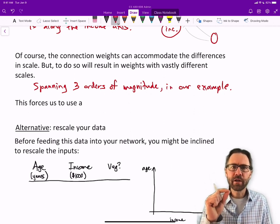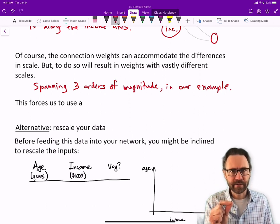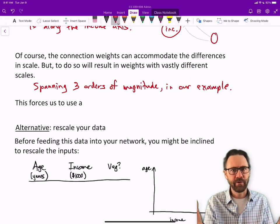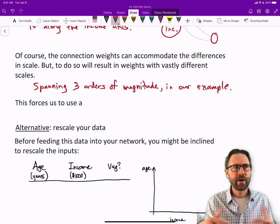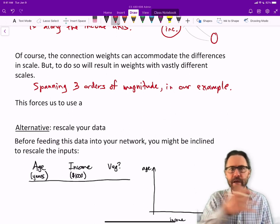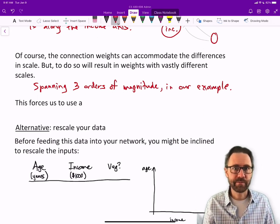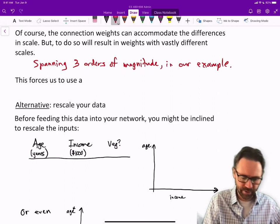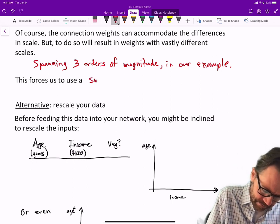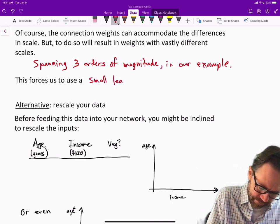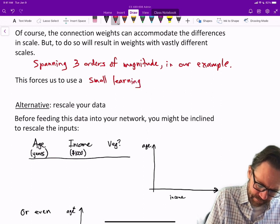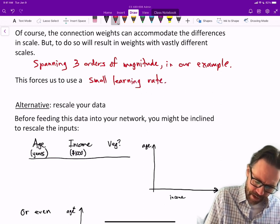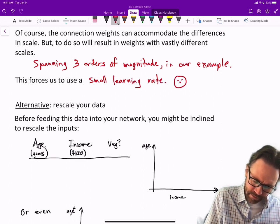When you're trying to decide on a learning rate, you have to choose one that's small enough so that the small weights can still be learned. You don't want to choose a learning rate so big that you keep bouncing around your solution. This forces us to use a small learning rate, and that makes us sad.